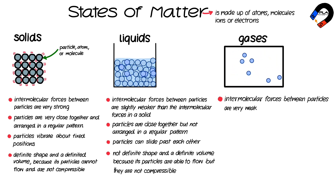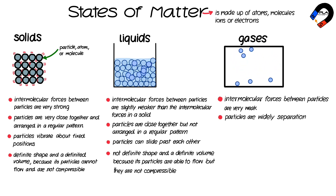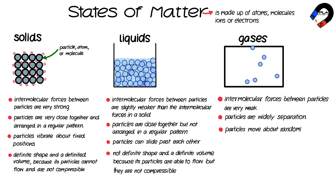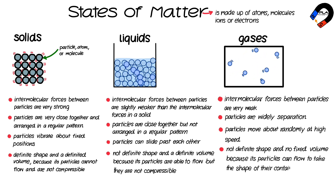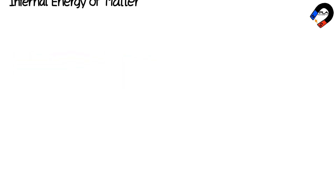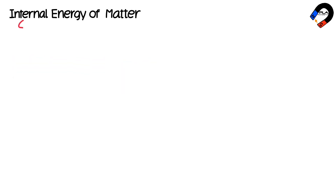Liquids have no definite shape but do have a definite volume because its particles are able to flow to take the shape of a container, but they are not compressible. Gases: the intermolecular forces between particles in a gas are very weak. This causes the particles in a gas to be widely separated. The particles move about randomly at high speeds. Gases have no definite shape and no fixed volume because its particles can flow to take the shape of their container and are highly compressible.